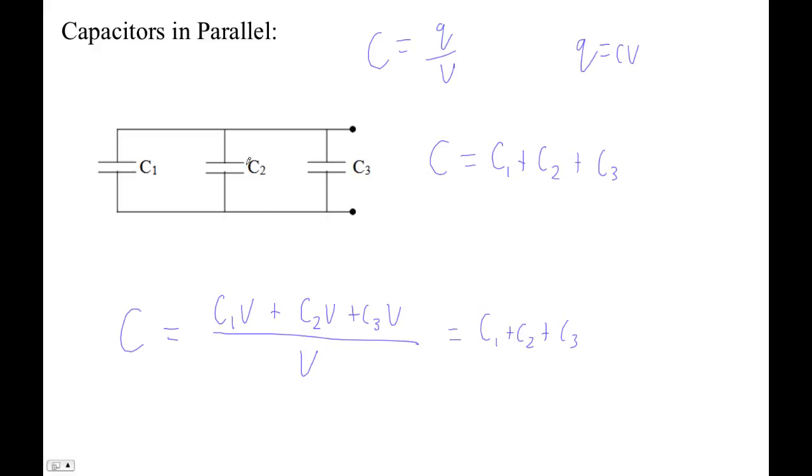And the reason that works that way is that basically you're just getting more area. Capacitance is epsilon-naught area over d. And essentially, we're just sort of connecting this to this and this to this. They just act in parallel, and therefore you can store more charge. They're electrically connected, so it's like tripling the area if they're all the same capacitance.